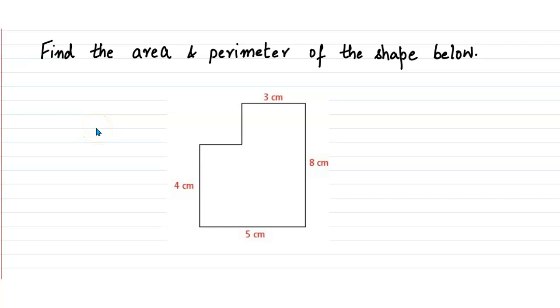Hello everyone, welcome to my channel 'The Colors of Mathematics.' Today we are going to find out the area and perimeter of the shape given below. In order to find out the area and perimeter of the shape, we need to find the missing sides.